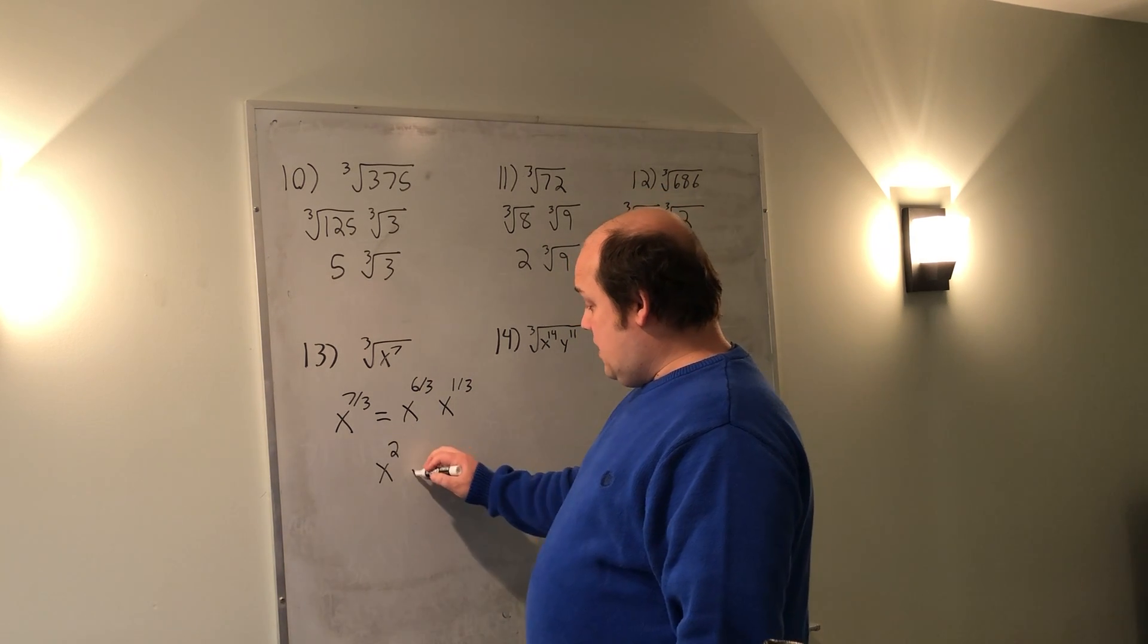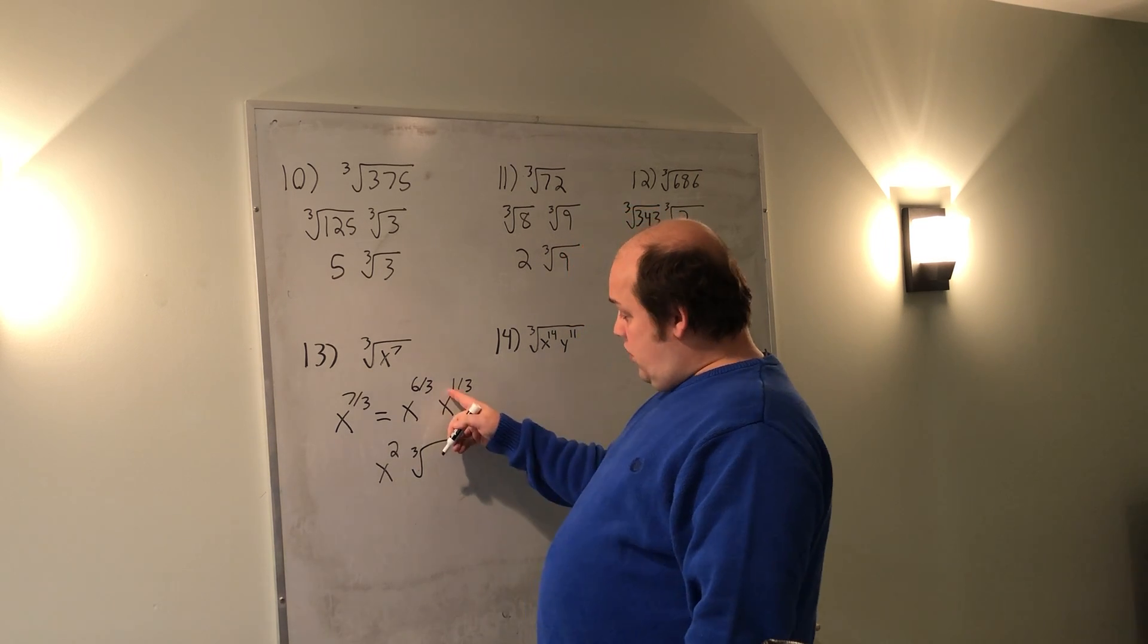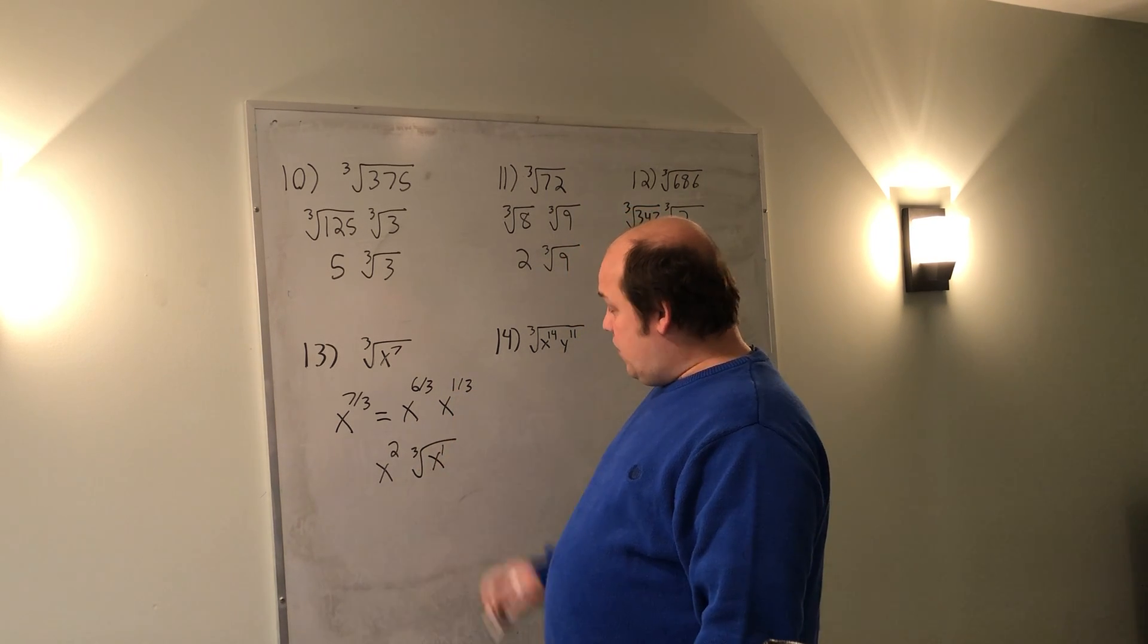And that leaves me x to the 1/3. 6/3 reduces to 2, so this is x squared on the outside. I'm then left with, still under the cube root, that remainder of x to the 1st.